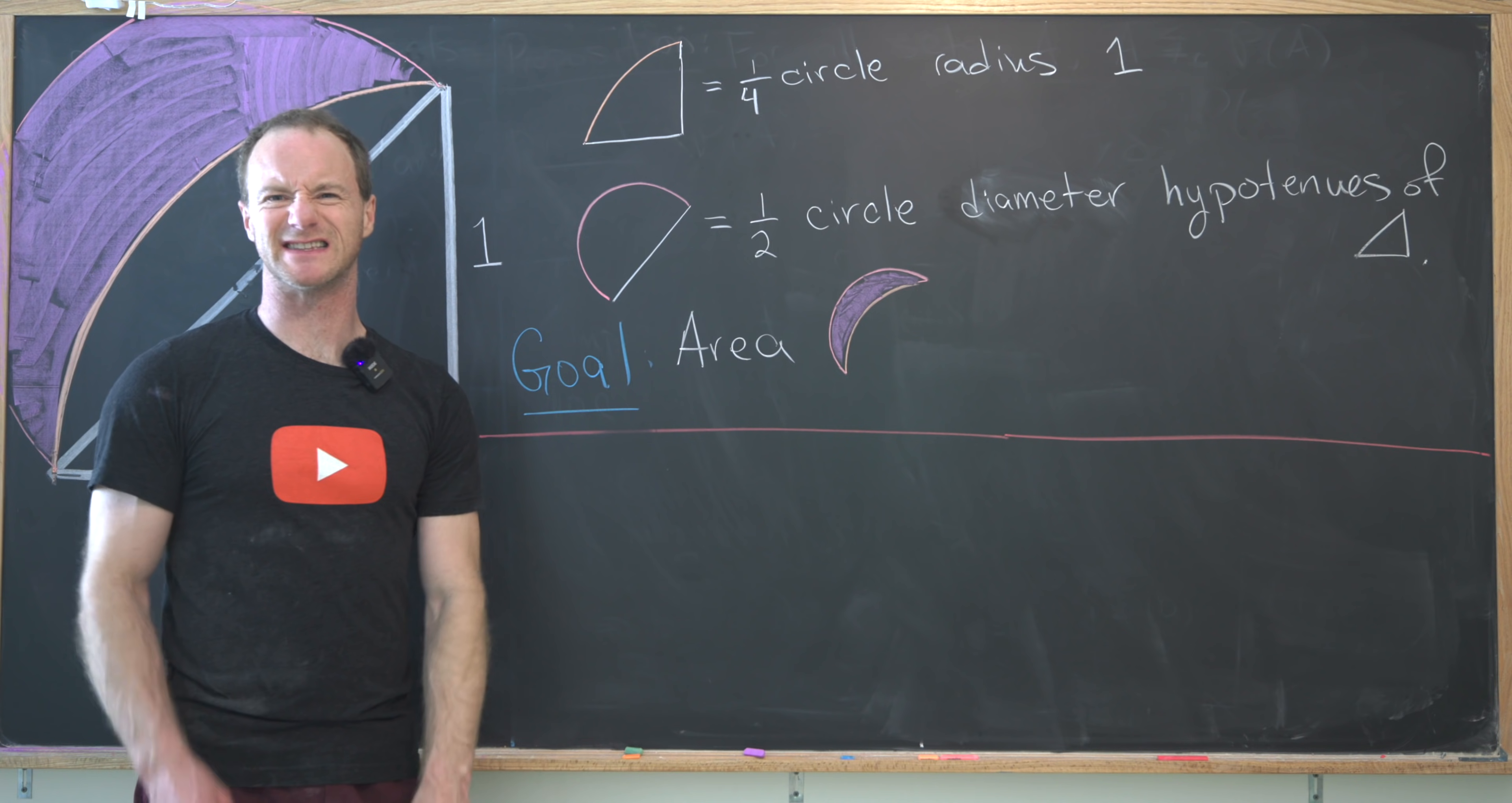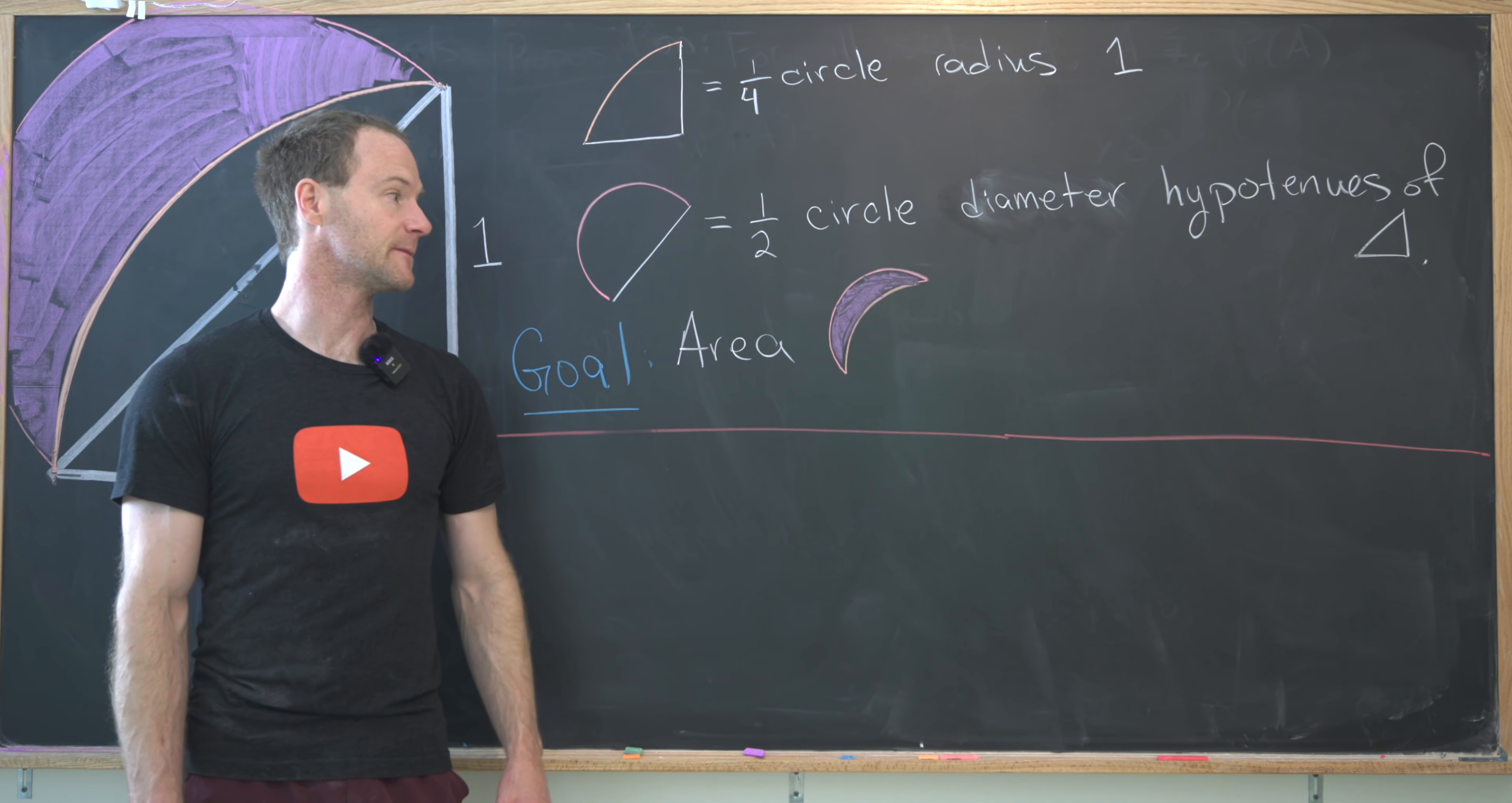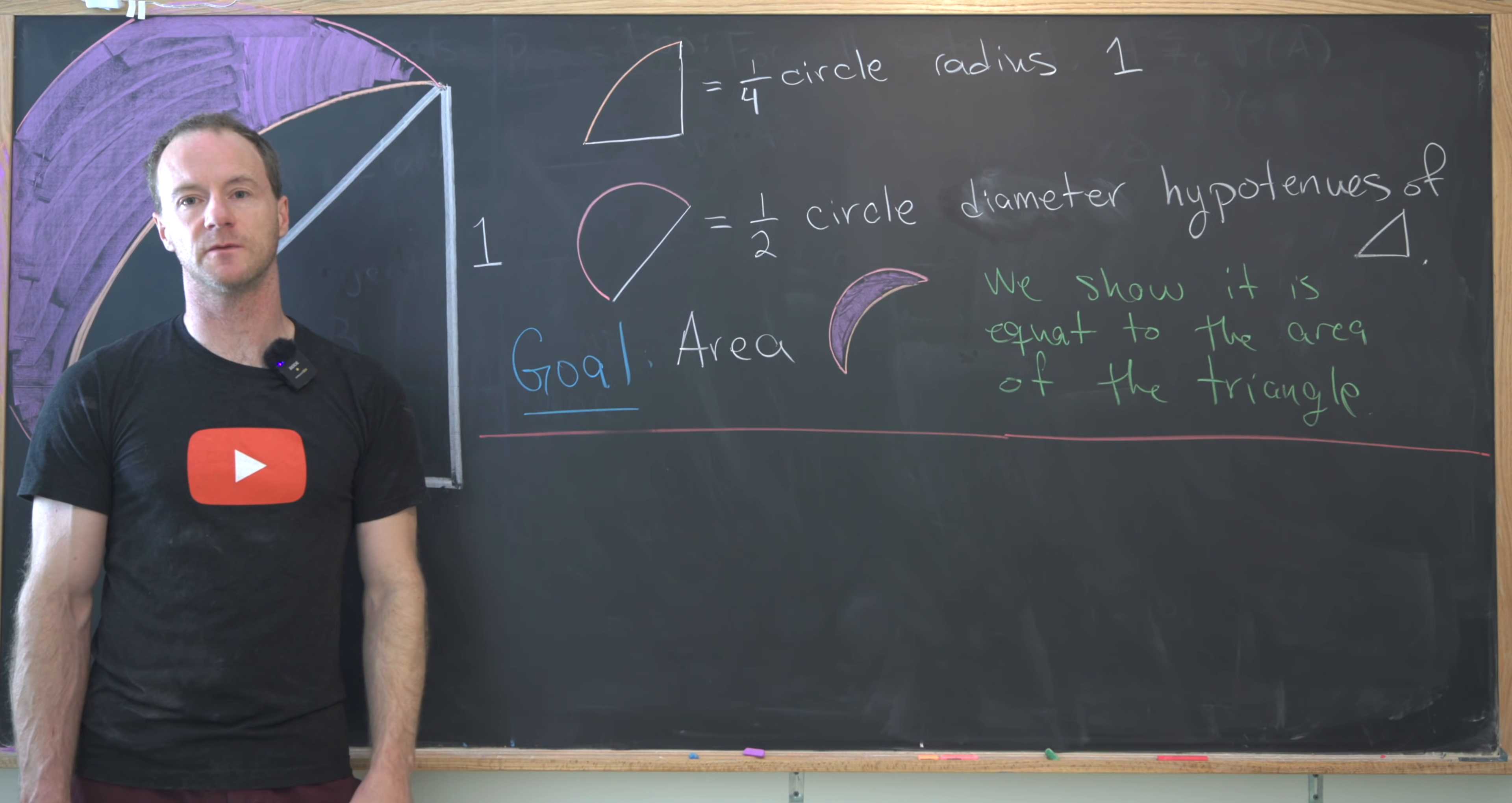And we're going to use the fairly standard trick in order to find the area of this lune. And that is we're going to show that it's equal to the area of the triangle, which is easy to calculate. So let's write that down. How can we show that it has equal area to that of the triangle?